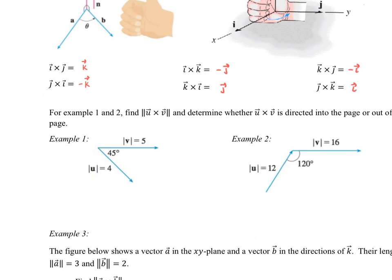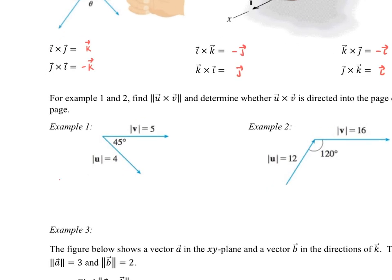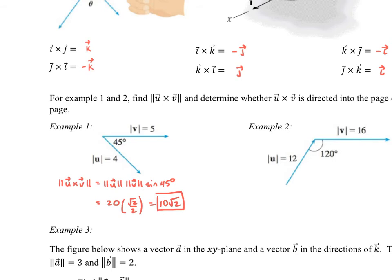I'm going to give a couple examples. Example one: we have two vectors V and U, and we're going to calculate the magnitude of U cross V. The magnitude of the cross product equals the magnitude of U times the magnitude of V times the sine of the angle between them, which is 45 degrees. We get 4 times 5 equals 20, times sine of 45 which is root 2 over 2. So we get 10 root 2 for our magnitude. Remember, that is also the area of the parallelogram formed by those two vectors.